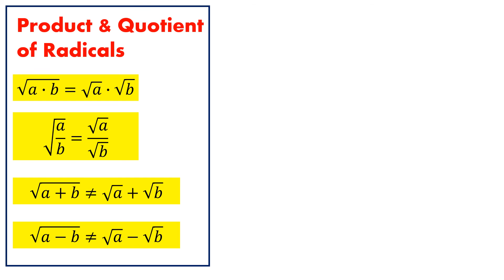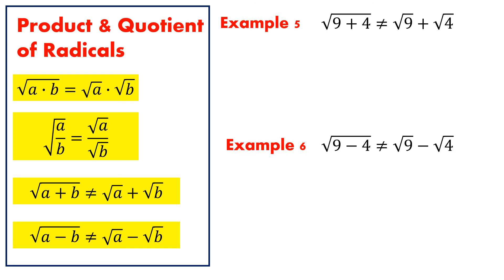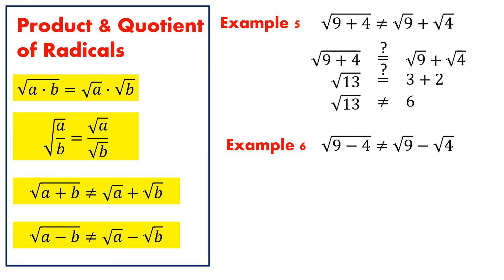Let us consider these examples. We need to show that the square root of 9 plus 4 is not equal to the square root of 9 plus square root of 4. Likewise, we need to show that the square root of 9 minus 4 is not equal to the square root of 9 minus square root of 4. Our solutions are as follows. Clearly, we see that the left-hand side is not equal to the right-hand side.